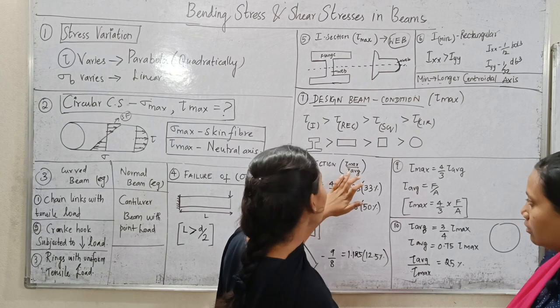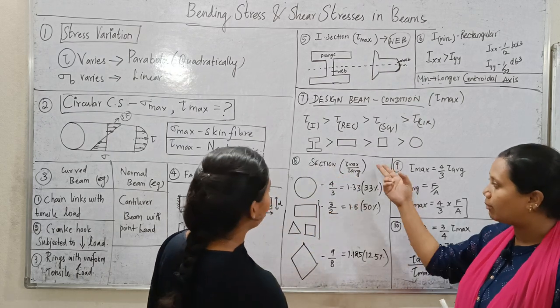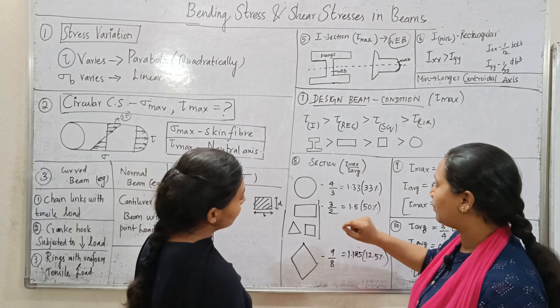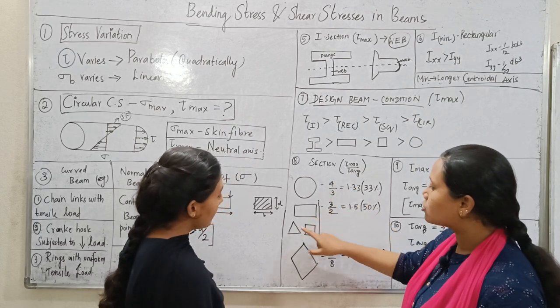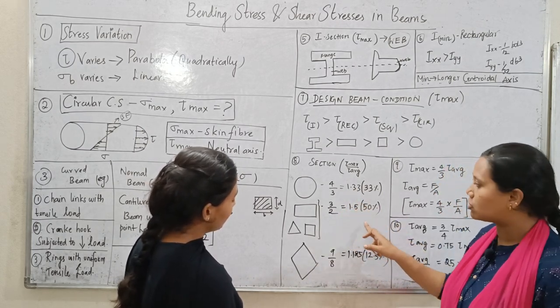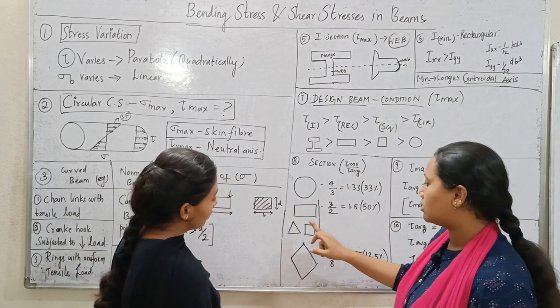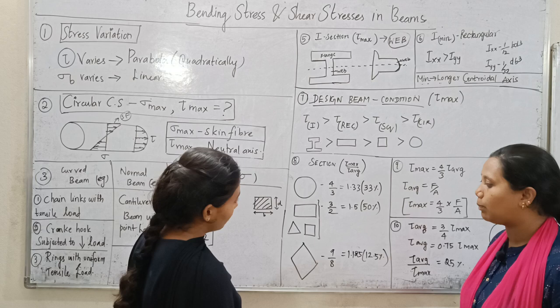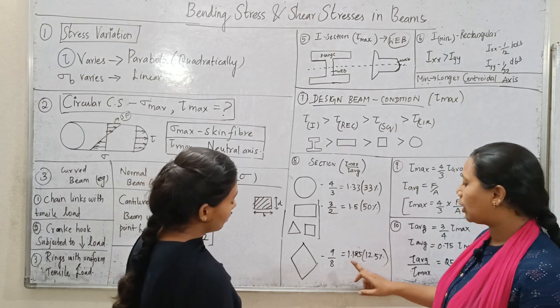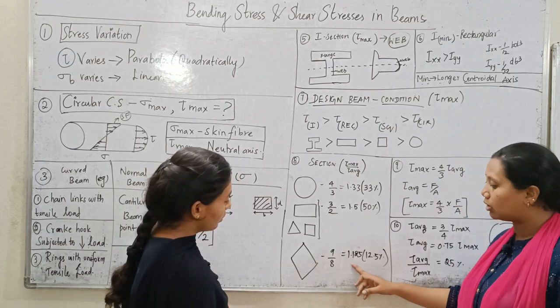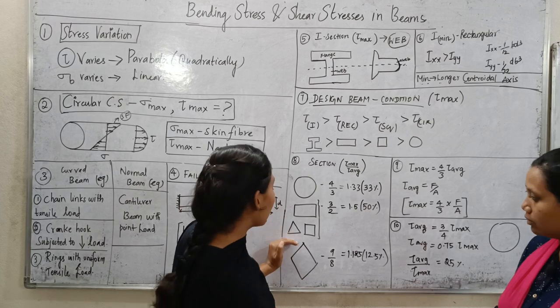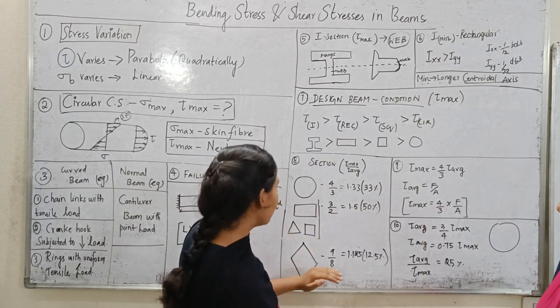Next one is the maximum shear stress and average shear stress ratio. Circular section is 4 by 3. Square, rectangle, triangle is 3 by 2. So 4 by 3 ratio is 1.33, so 33%. 3 by 2 is 1.5, so 50%. If diamond cross section, the ratio is 9 by 8, ratio is 1.125, so 12.5%.